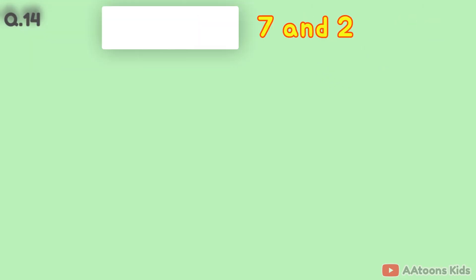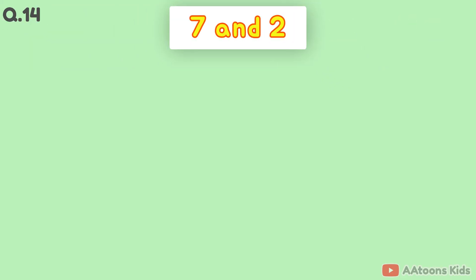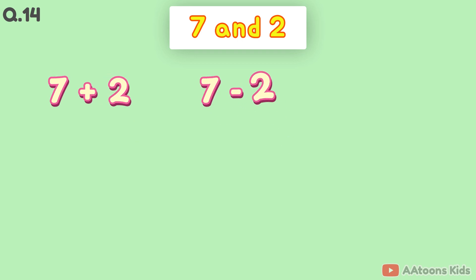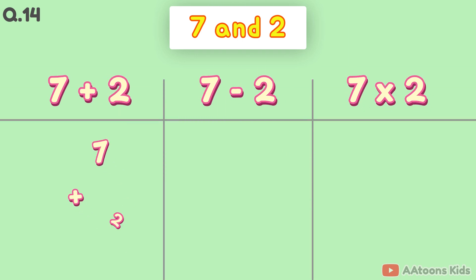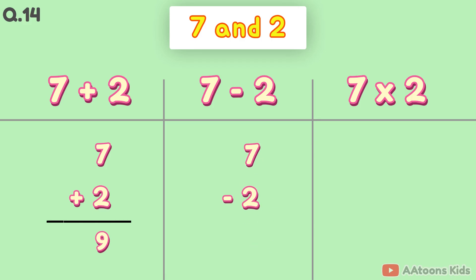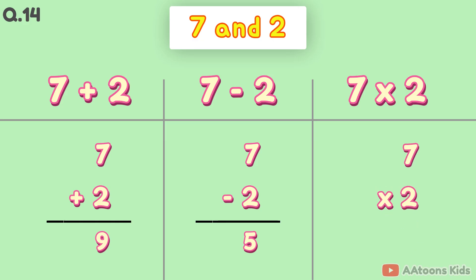The two numbers are 7 and 2. 7 plus 2 is 9. 7 minus 2 is 5. 7 times 2 is 14.